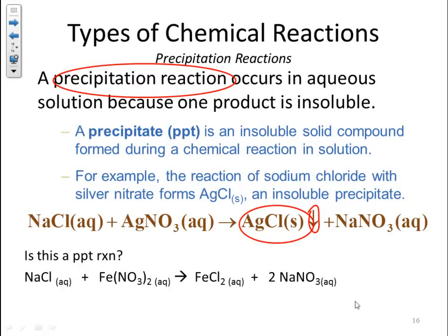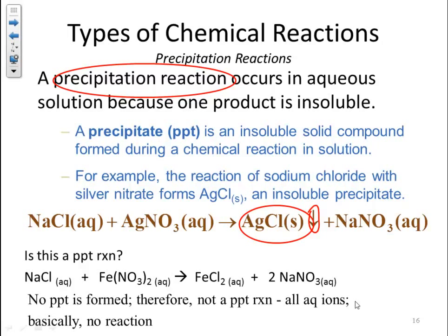Is this a precipitation reaction? We have sodium chloride plus iron(II) nitrate forming iron(II) chloride and sodium nitrate. Notice that all reactants are aqueous, and the products are all aqueous because we're forming two soluble salts. So there is no precipitate being formed, no solid being formed. The answer is no — no precipitate is formed, therefore not a precipitation reaction. Basically all aqueous ions — there's no reaction going on in the solution.